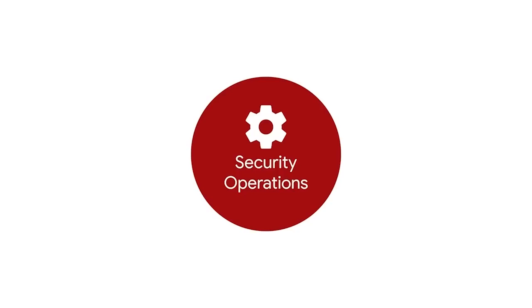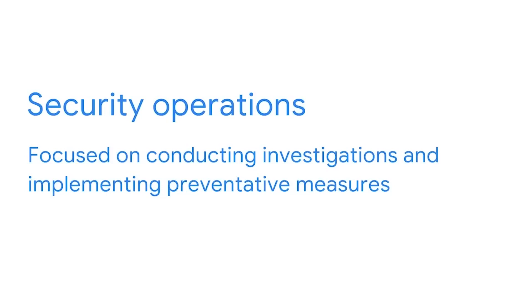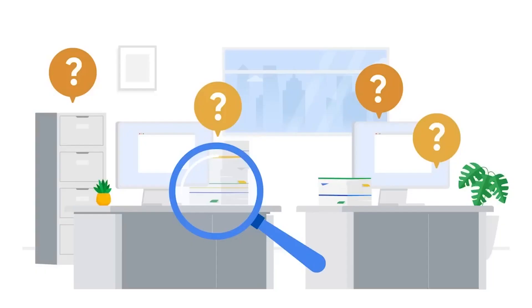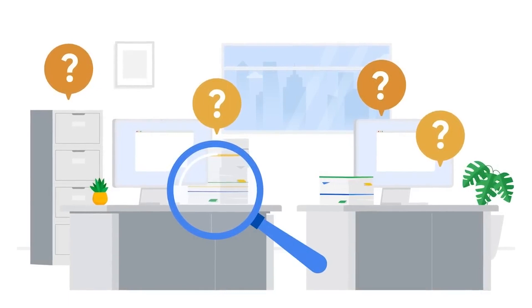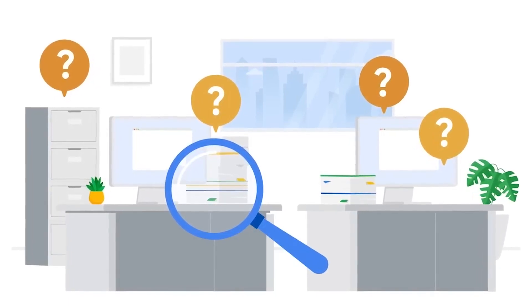The security operations domain is focused on conducting investigations and implementing preventative measures. Investigations begin once a security incident has been identified. This process requires a heightened sense of urgency in order to minimize potential risks to the organization. If there is an active attack, mitigating the attack and preventing it from escalating further is essential for ensuring that private information is protected from threat actors. Once the threat has been neutralized, the collection of digital and physical evidence to conduct a forensic investigation will begin. A digital forensic investigation must take place to identify when, how, and why the breach occurred.